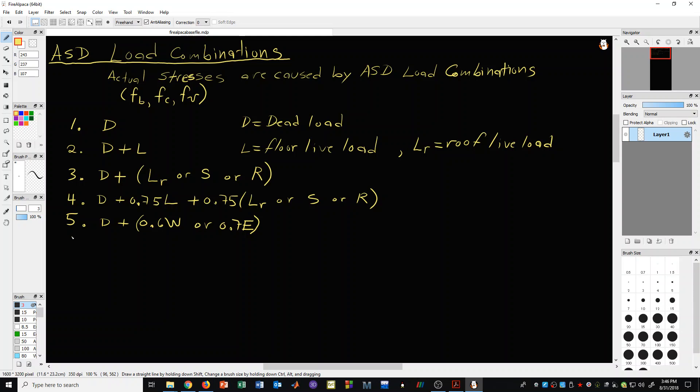The next load combination is referred to as load combination 6a. In this case, we have dead plus 0.75 L, and we also have plus 0.75 times 0.6 wind plus 0.75.